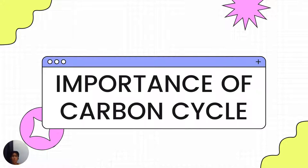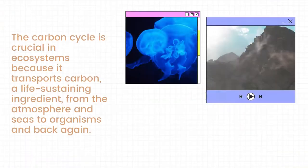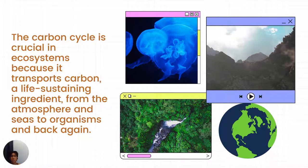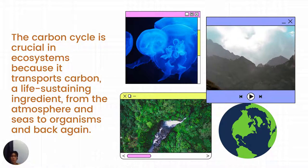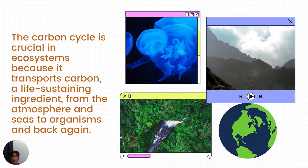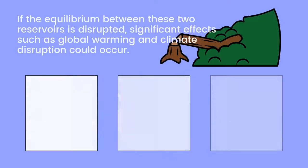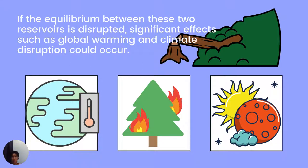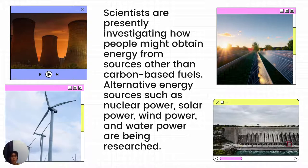So, what are the importance of the carbon cycle? The carbon cycle is crucial in ecosystems because it transports carbon, a life-sustaining ingredient, from the atmosphere and seas to organisms and back again. If the equilibrium between these reservoirs is disrupted, significant effects such as global warming and climate disruption could occur. Scientists are presently investigating how people might obtain energy from sources other than carbon-based fuels. Alternative energy sources such as nuclear power, solar power, wind power, and water power are being researched.